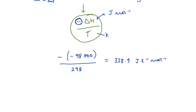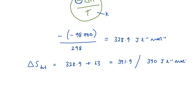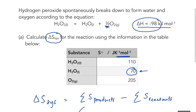Don't round until the very end. The total entropy change equals 328.9 plus 63, which gives 391.9. Quoted to two significant figures, the final answer is 390 joules per kelvin per mole. It's very positive, which is what we'd expect: a single molecule breaks down to form two, one of which is a gas. There are far more ways to arrange two molecules than one, and gases have many more ways to distribute energy, so the system is becoming more random and disordered.